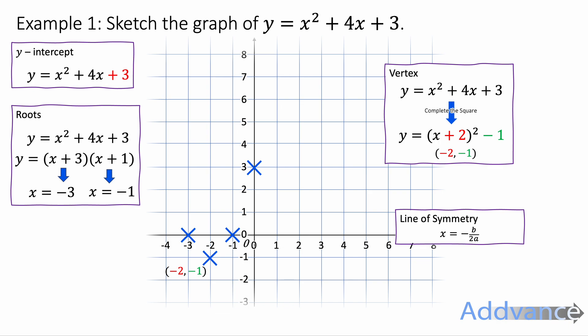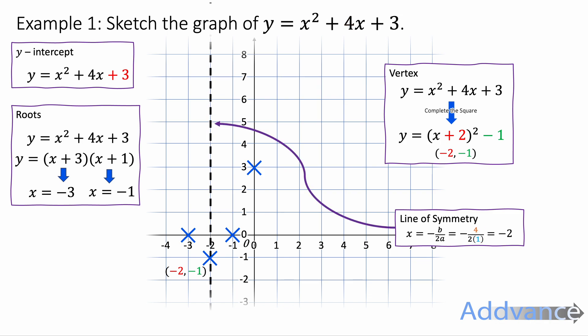The line of symmetry is x equals minus b over 2a. For this quadratic, x squared plus 4x plus 3, a is 1 and b is 4. So substituting in, we get minus 4 divided by 2, which is minus 2. The equation of the line of symmetry is x equals minus 2. We've now filled in all the details, and the U-shape that fits looks like this. We have sketched the quadratic — we are finished.